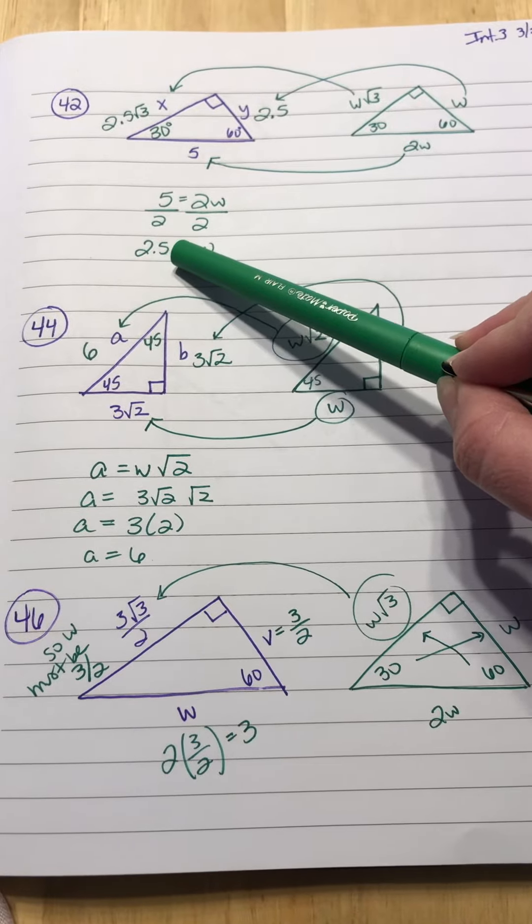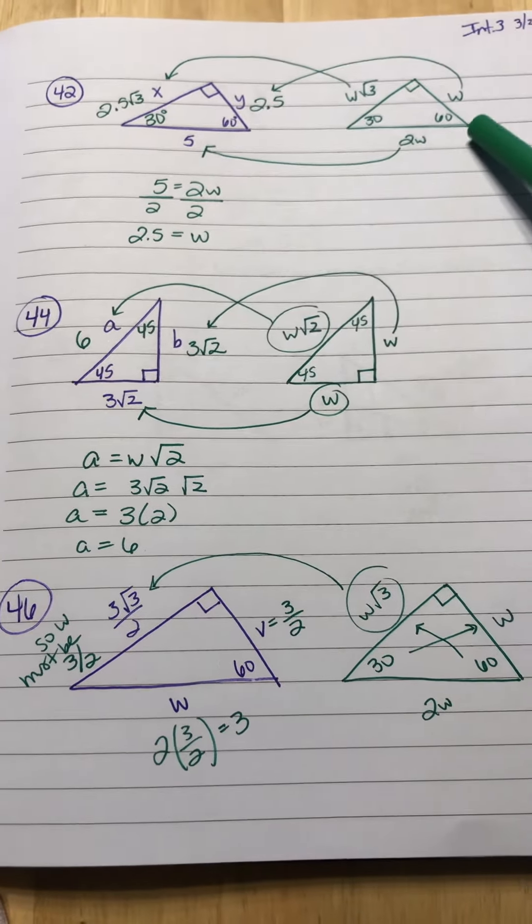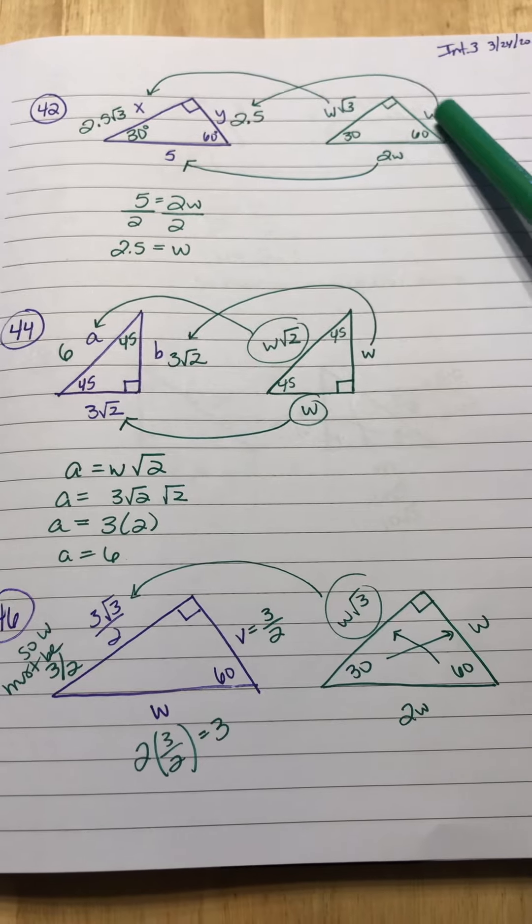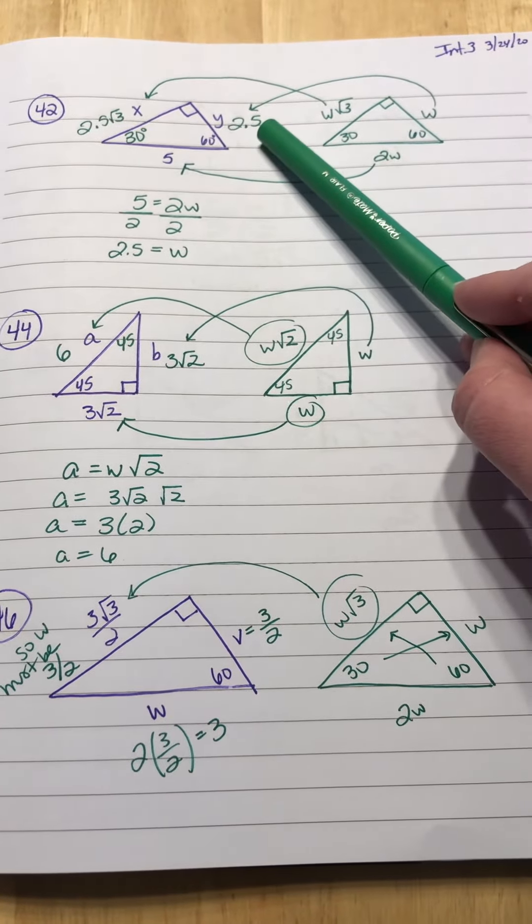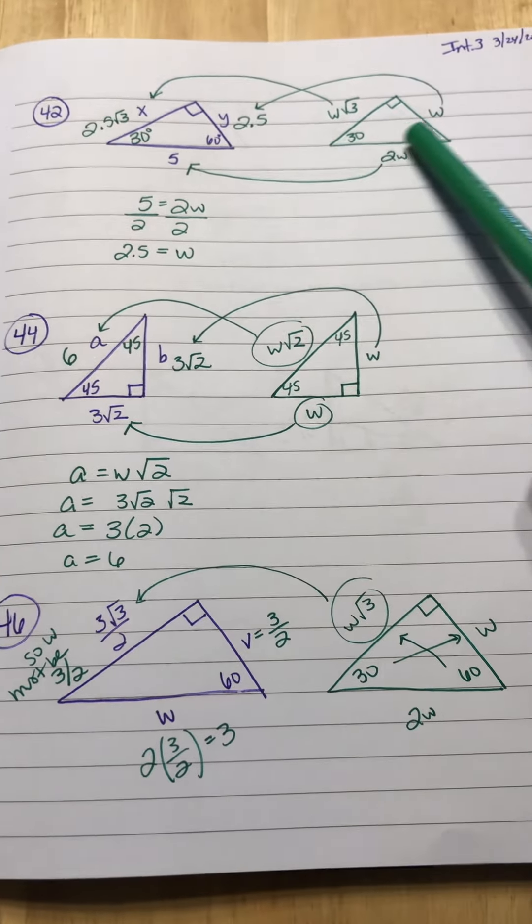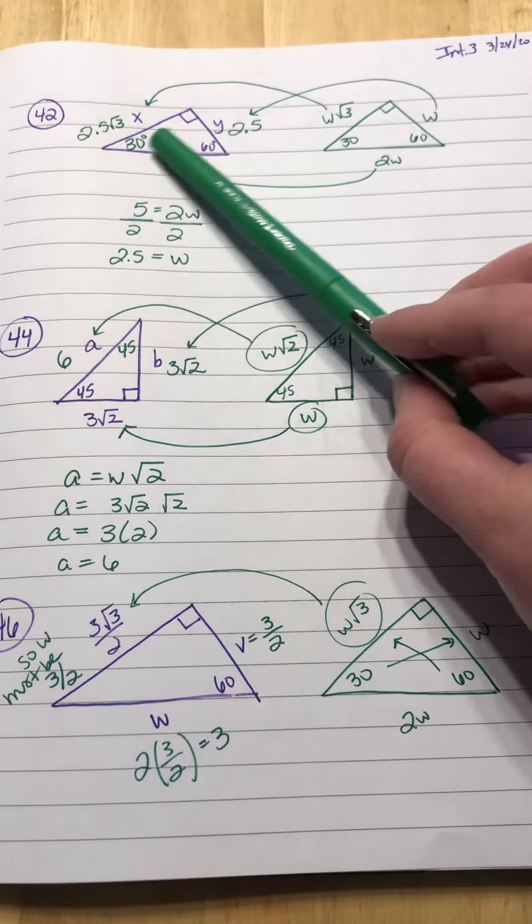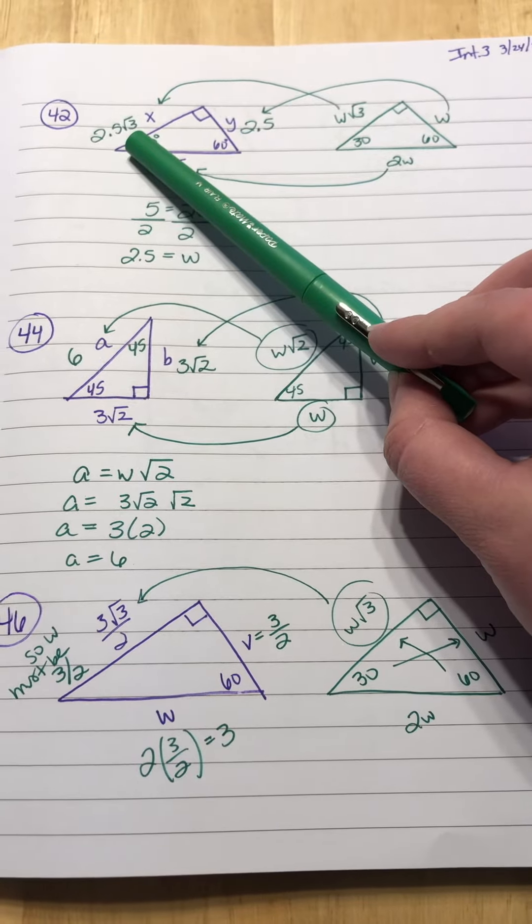Now all you have to do is replace all the W's with 2.5. So the W across from 30 would be here, so Y equals 2.5, and then across from 60 is W square root of 3. So you're going to write 2.5 square root of 3.